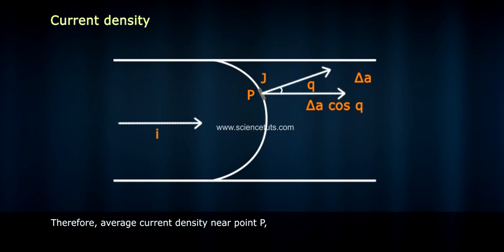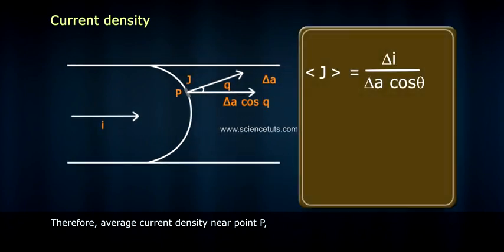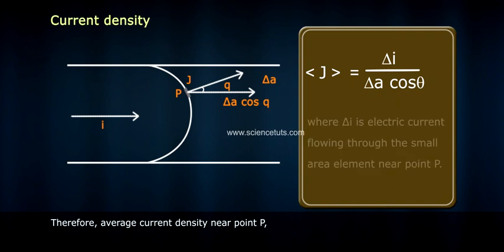Therefore, average current density near point P is average J = ΔI/(ΔA cos θ), where ΔI is electric current flowing through the small area element near point P.